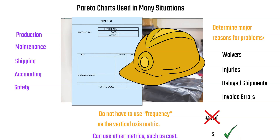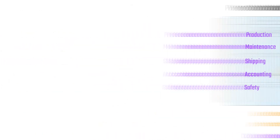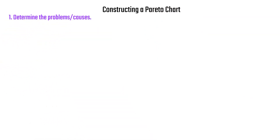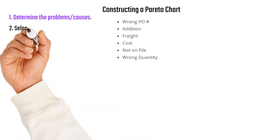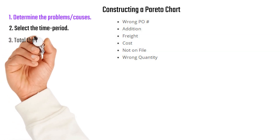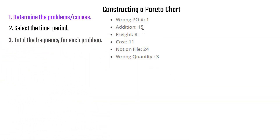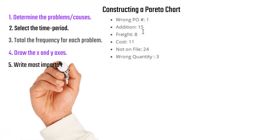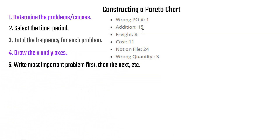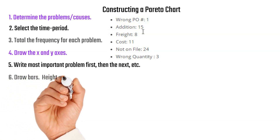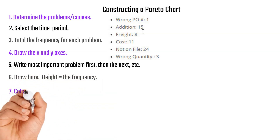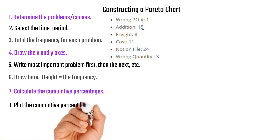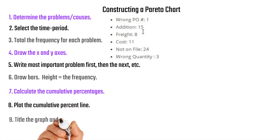Here's how you construct a Pareto diagram using billing errors as an example. Determine the problems or causes — billing errors due to wrong PO number, addition errors, freight cost, not on file, and quantity. Select the time period, total the frequency for each problem, draw the x and y axes starting with the most important problem first, draw the bars, calculate cumulative percentages, plot the cumulative percentage line, and title the graph.